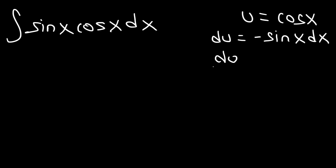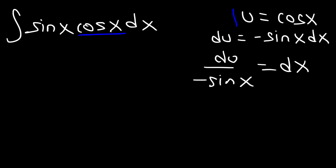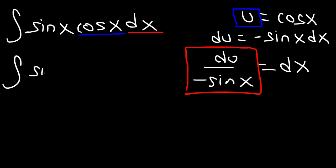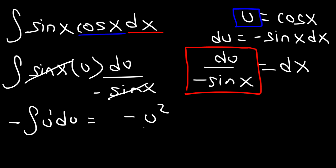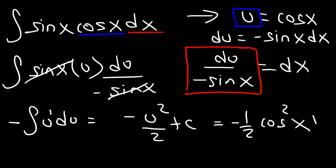In this example, I'm going to solve for dx — it's du divided by negative sine. So let's replace cosine with u, and let's replace dx with du over negative sine x. We're going to have the integral of sine x times u times du over negative sine. We can cancel sine, and so we have negative integral of u to the first du, which is going to be u squared over 2 plus C.